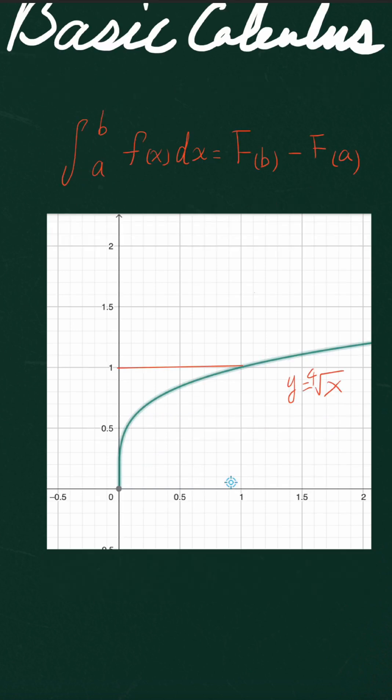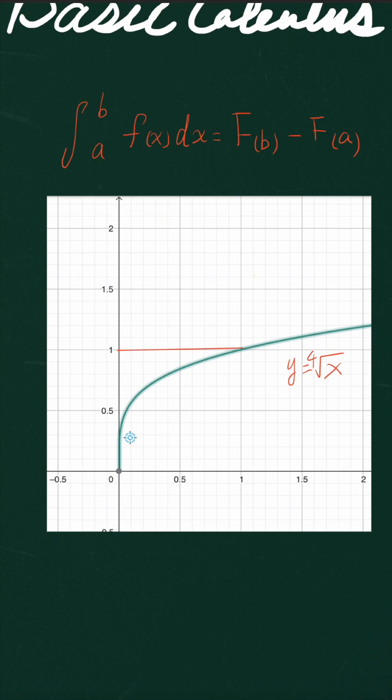So we're going to try to solve a problem to practice using this formula. So we have this problem over here. The green curve in this coordinate is the graph of the function y equals the fourth root of x. The red line over here is y equals 1. So the question actually asks us to find this area that I'm shading with purple.